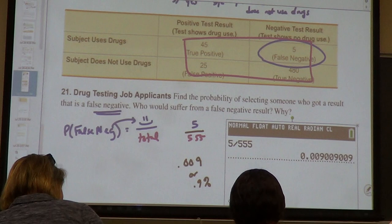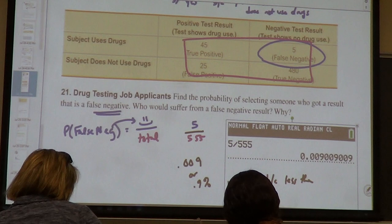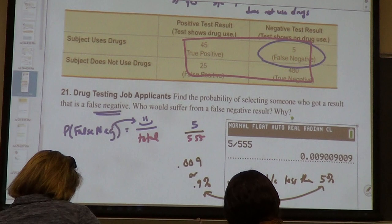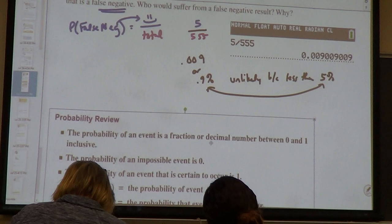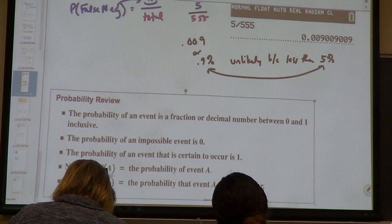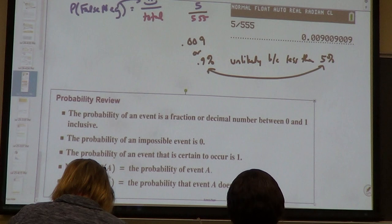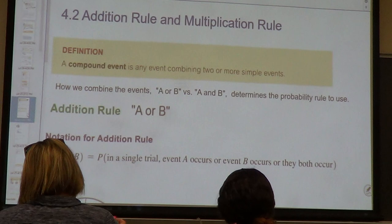Why is it unlikely? Because it is less than 5%. Remember, when we look at 5% we have to make sure our probability is in terms of percents. At the bottom, it's just reminding you that you can write probability as a fraction, a decimal, or a percentage. If the probability does not happen it's zero; if it's certain it's one. The probability of an event is written as P(A), and if it's a complement we put a line over it. We're taking the odds page out — we don't do odds anymore. Go straight to 4-2.